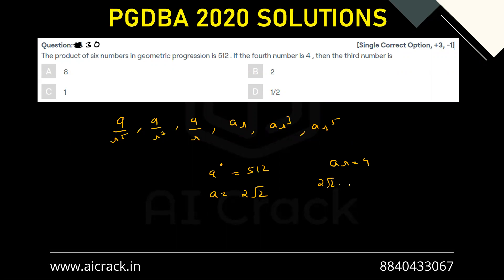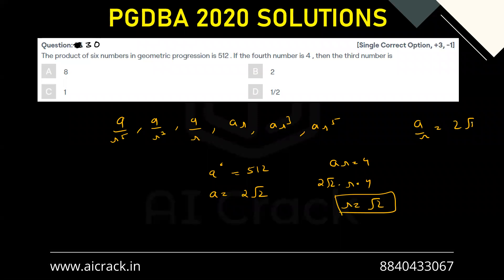Since a = 2√2, we get 2√2 · r = 4, so r = √2. We need to find the third number, which is a/r. So a/r = 2√2 / √2 = 2. Therefore, option (b) is the correct answer.